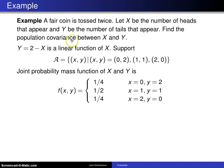Here is an example that involves computing the population covariance for a pair of discrete random variables X and Y. A fair coin is tossed twice. Let X be the number of heads that appear and Y be the number of tails that appear.